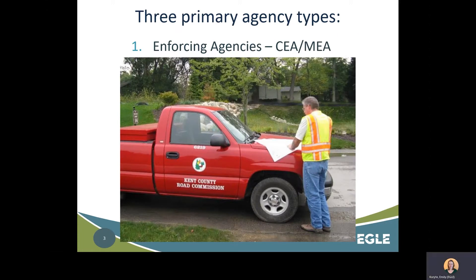There are three primary agency types under Part 91. First are enforcing agencies. Counties are mandated by legislation to administer and enforce Part 91. A specific agency is designated by the County Board of Commissioners to administer the program, issue permits, monitor compliance, and enforce Part 91. These are known as County Enforcing Agencies, or CEAs. Cities, villages, and townships have the option to be an enforcing agency too, known as Municipal Enforcing Agencies, or MEAs.